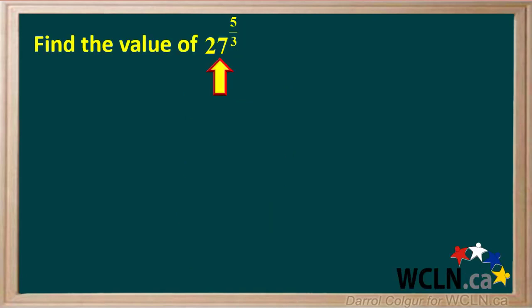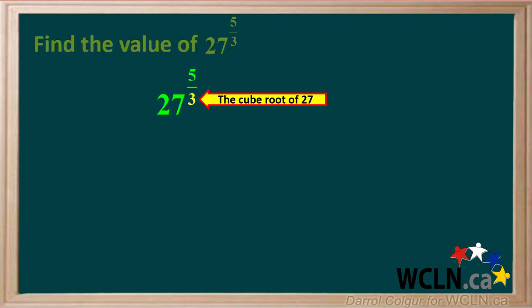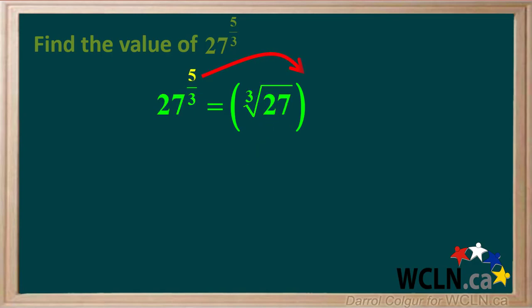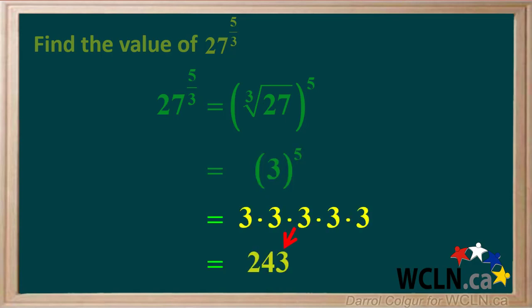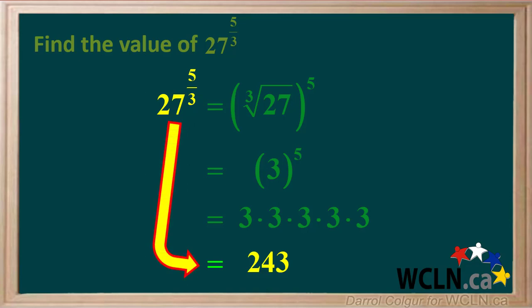Let's do another example. We're asked to find the value of 27 to the power of 5 over 3. The 3 in the denominator of the fractional exponent means the cube root of 27, so we'll write the cube root of 27 to the power of 5. We know that the cube root of 27 is 3, so we have 3 as a base to the power of 5. 3 to the power of 5 is 3 times 3 times 3 times 3 times 3, which comes out to 243. So 27 to the power of 5 over 3 has a value of 243.